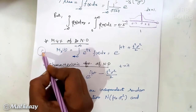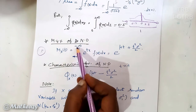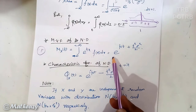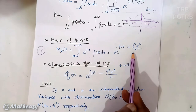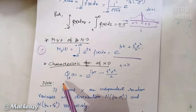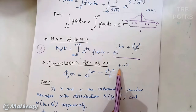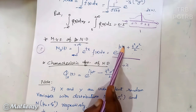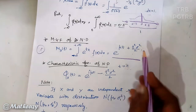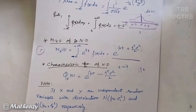The moment generating function (MGF) of the normal distribution is M_X(t) = integral from minus infinity to plus infinity of e^(tx) × f(x) dx. After substitution and solving, the MGF of the normal distribution is M_X(t) = e^(mu·t + sigma²·t²/2). Replacing t with it gives the characteristic function: phi_X(t) = e^(i·mu·t − sigma²·t²/2), using i² = −1.